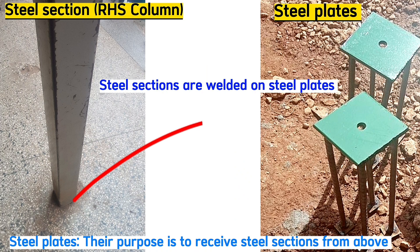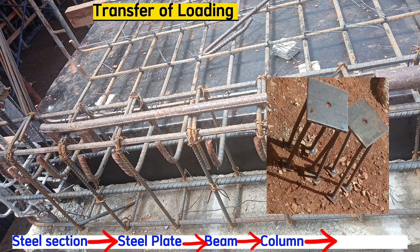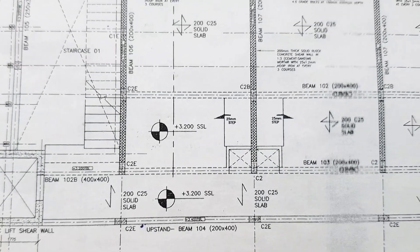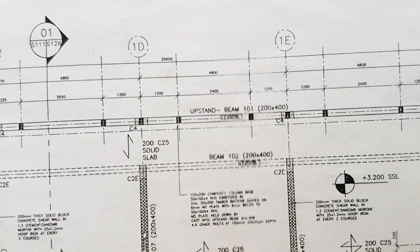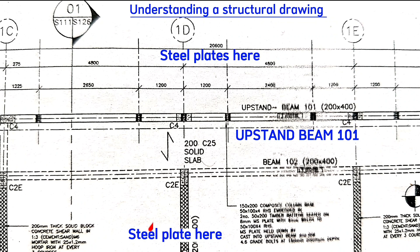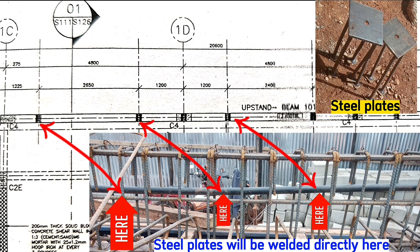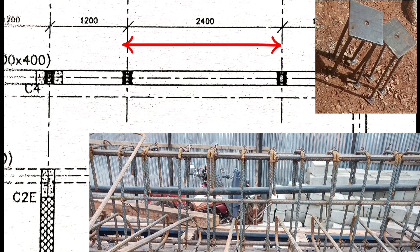Steel columns or RHS columns are welded onto these steel plates, and the steel plates transfer loading from the beams to the columns and then to the foundation. Looking at the first floor structure layout, it has upstand beam 101 of size 200 by 400 with steel plates welded directly into the beam at measured positions — for example, these two are 2.4 meters apart.